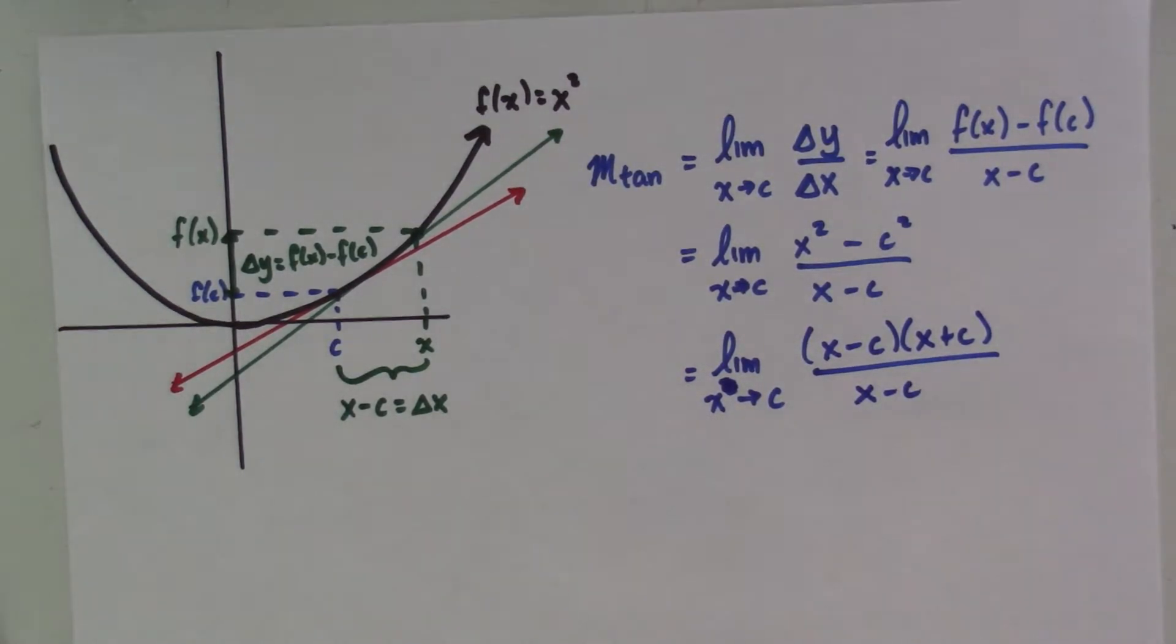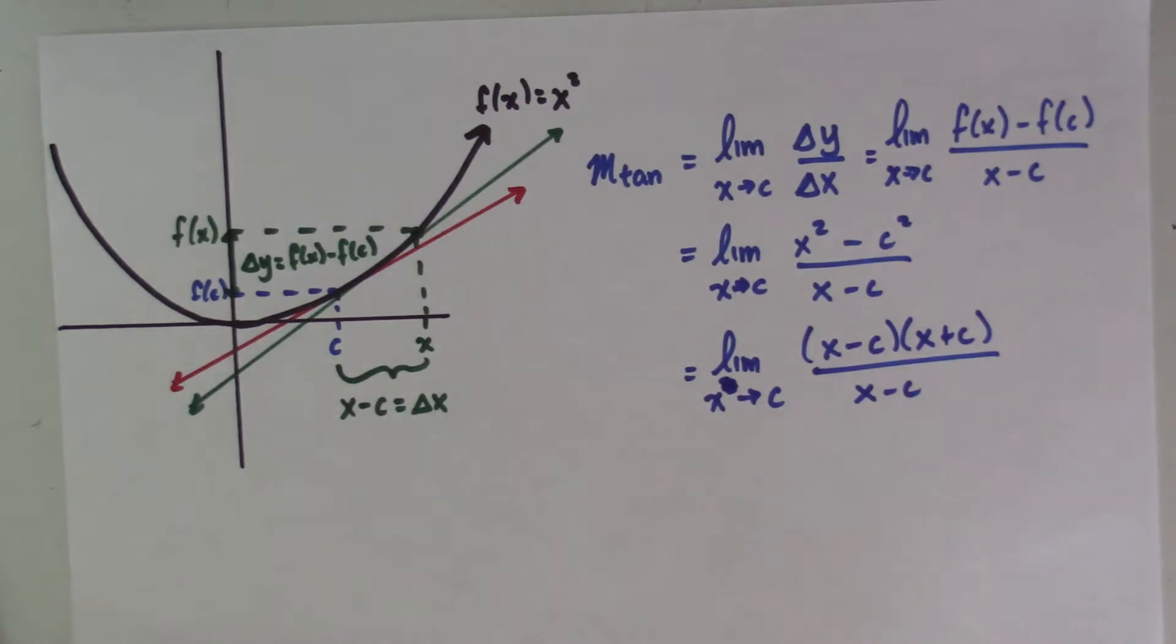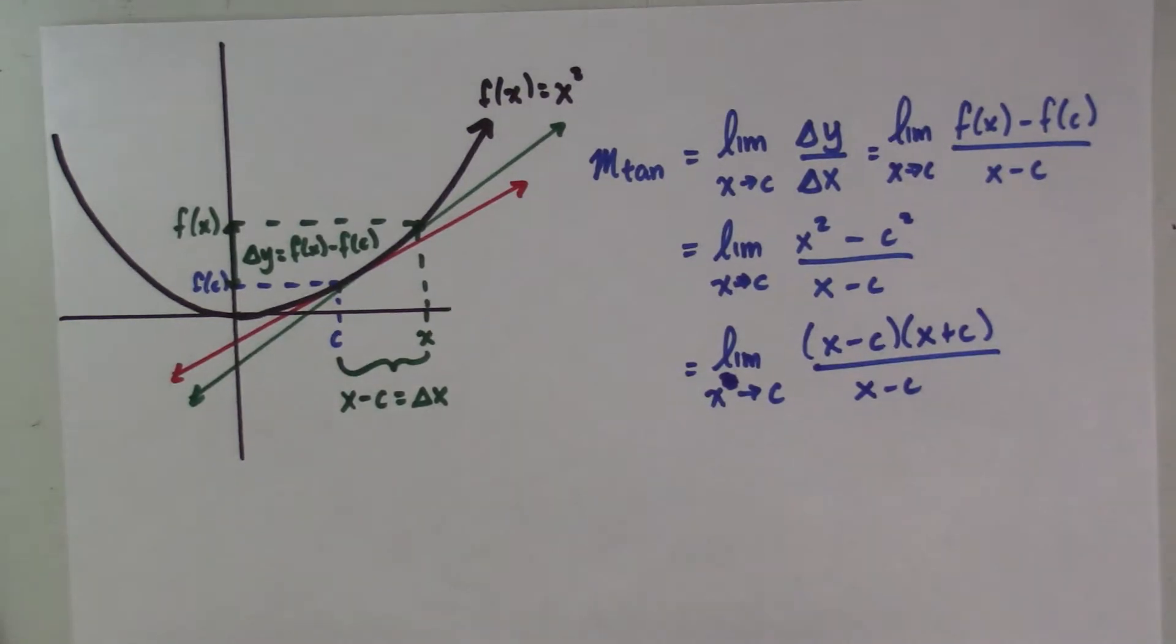Now, I want to pause here because what we're going to see here in a moment is that I can cancel these two x minus c's because I have one on top and one on the bottom.